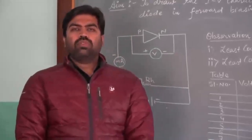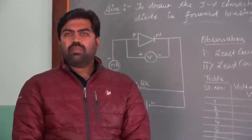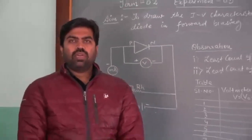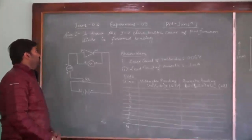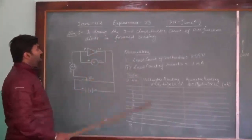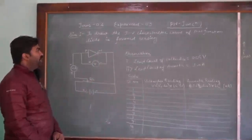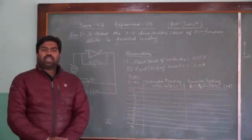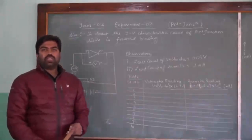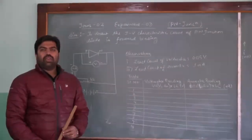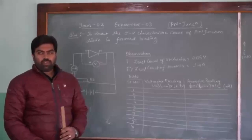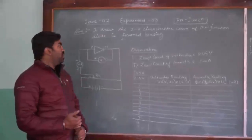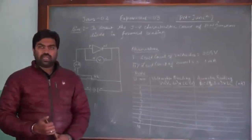Good morning to all of you. Today we will discuss the experiment on P-N junction diode. Our aim is to draw the IV characteristic curve of a P-N junction diode in forward bias mode. There are two types of bias for a P-N junction diode: forward bias and reverse bias, but today we will only discuss the forward bias IV characteristic.